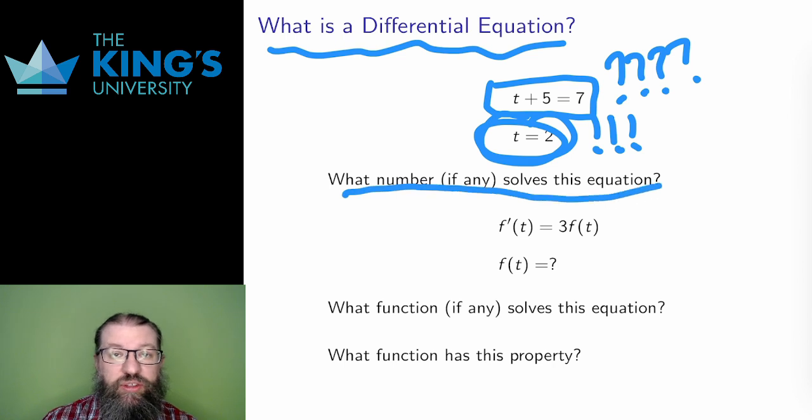Of course, many things can happen. There might be a single solution, many solutions, or no solutions at all. If there are no solutions, well, that fact may depend on the number set in consideration. Maybe there are no rational solutions, but there are real solutions or complex number solutions.